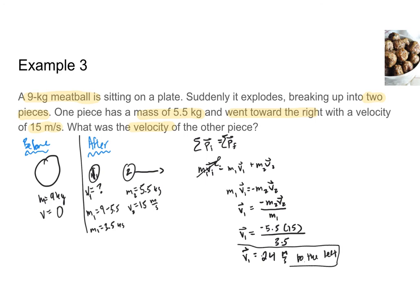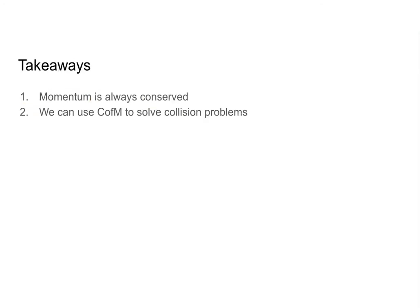Now that you've seen three different kinds of momentum problems, let's talk takeaways. First, momentum is always conserved. Second, we can use the conservation of momentum to solve collision problems. With that, you now know how to solve conservation of momentum problems. It is your turn to give this a try on your own. Best of luck and happy solving.